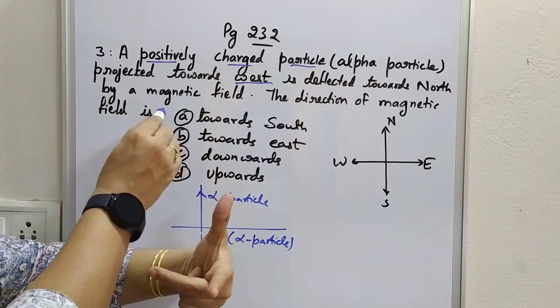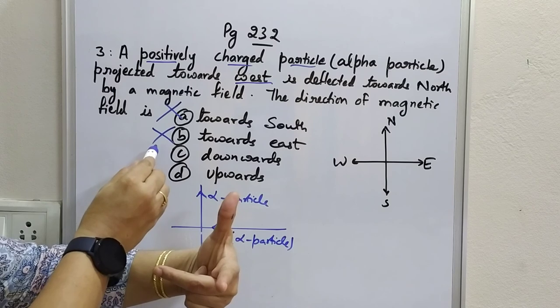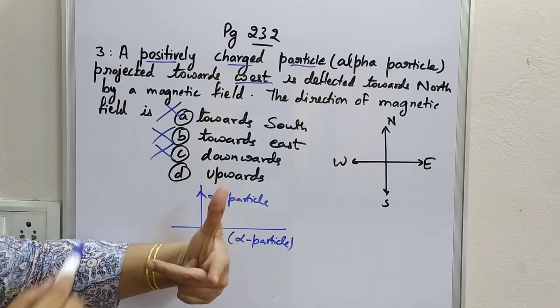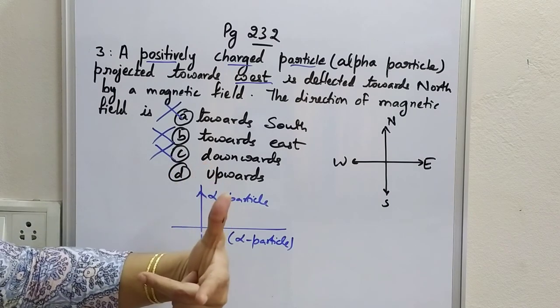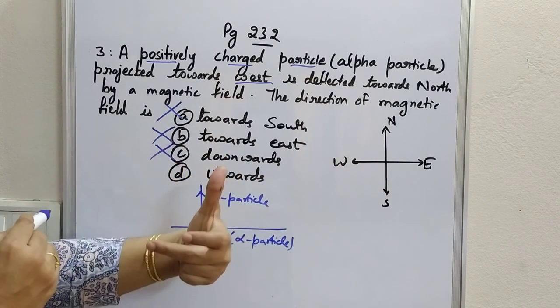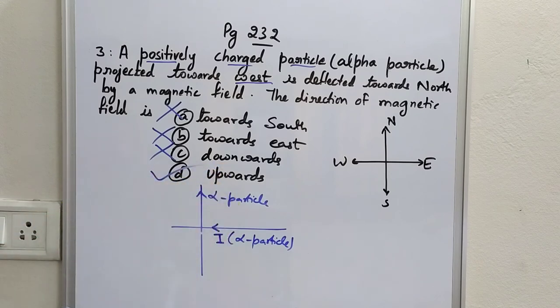Is it towards south? No. Towards east? No. Downwards? No. Upwards? Yes — up to the plane of the board. So the direction of the magnetic field is upwards or outwards from the plane.